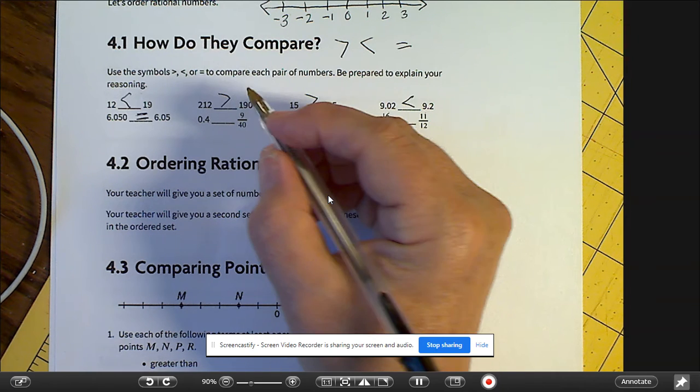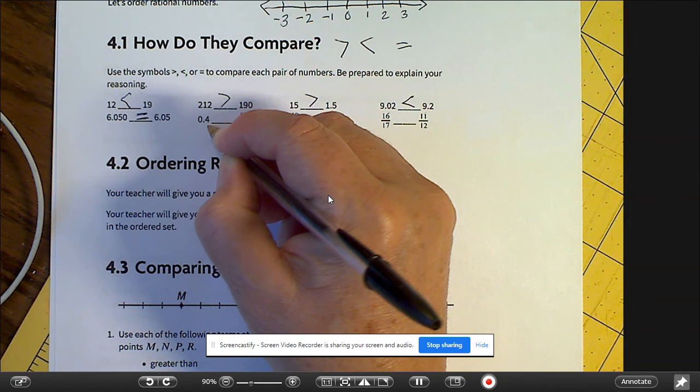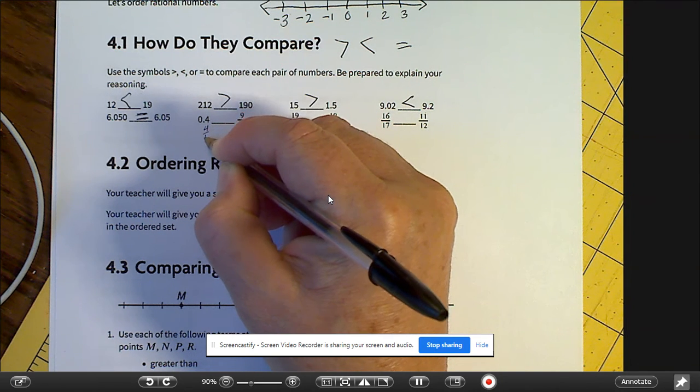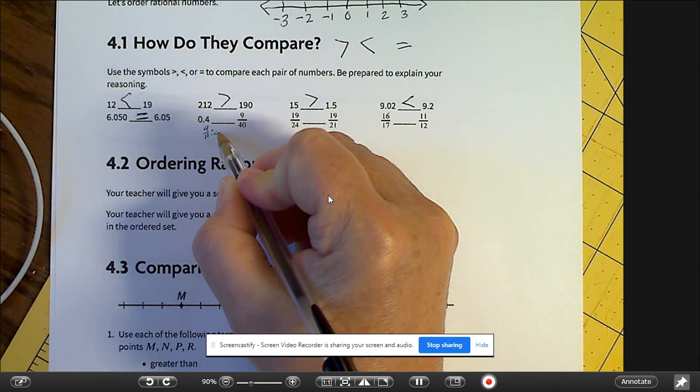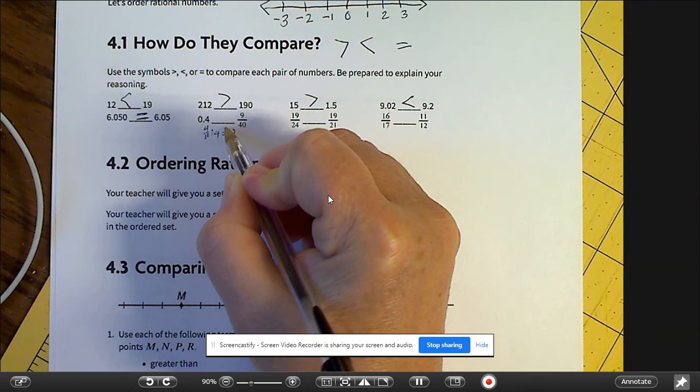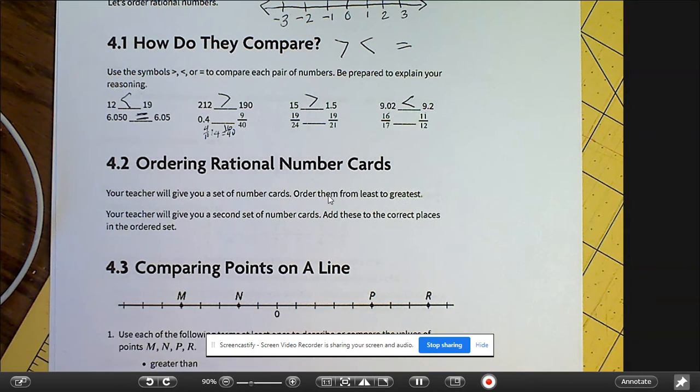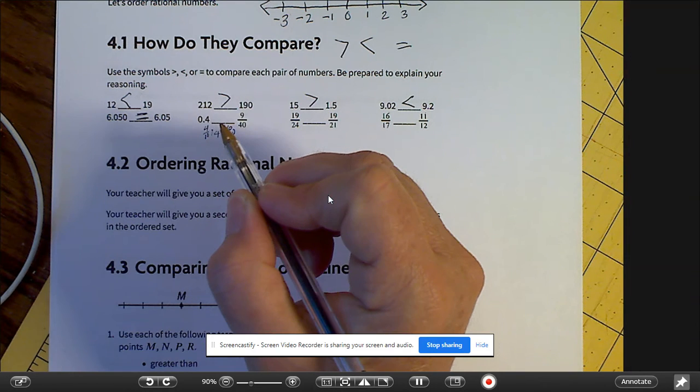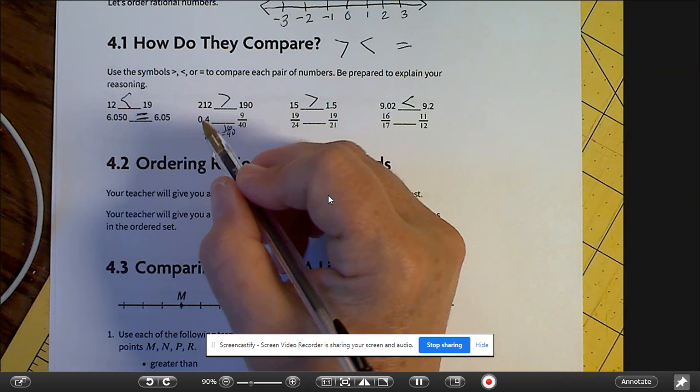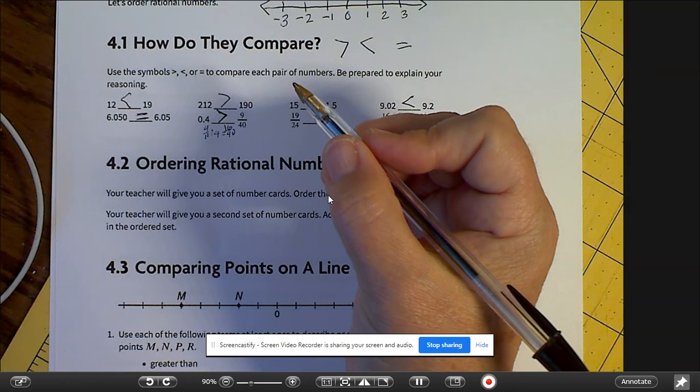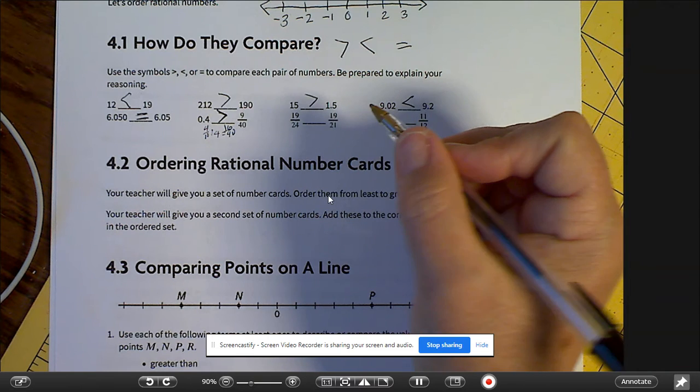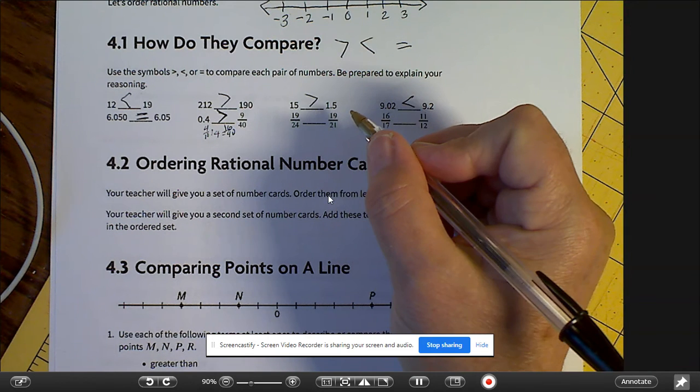And we have 0.4 and 9 fortieths. And 0.4 would be 4 tenths. And if you multiply that by 4, you get 40ths. You would get 16 fortieths. So 0.4 is greater than 9 fortieths. 19.24 and 19.21.